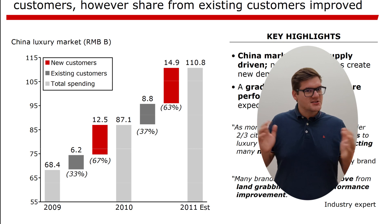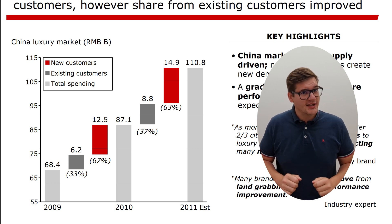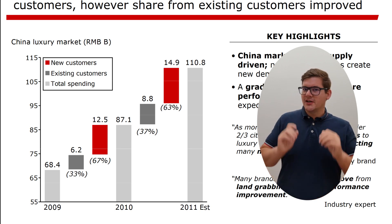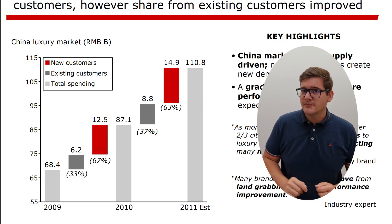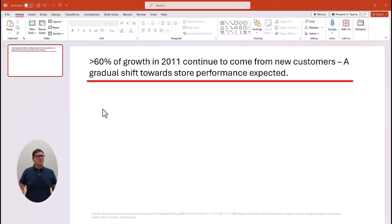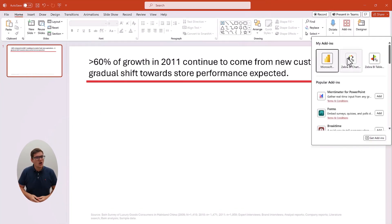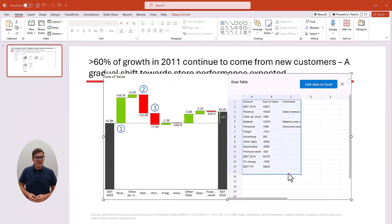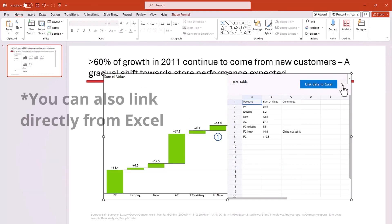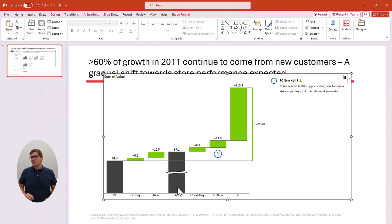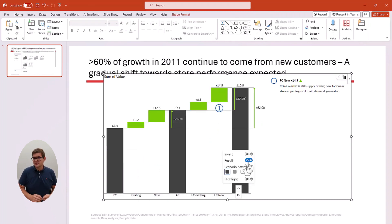Creating a bridge chart like this in 2023, following IBCS guidelines, is pretty easy — especially with Zebra BI. In PowerPoint, with your data prepared, simply go to My Add-ins and choose Zebra BI Charts. Pick the chart type that best represents your data, put in your numbers, and your beautiful bridge chart is practically complete — much faster than with other tools or native visuals.